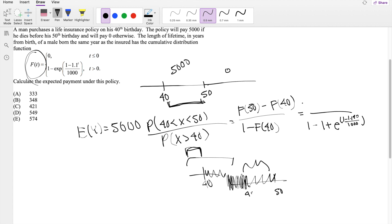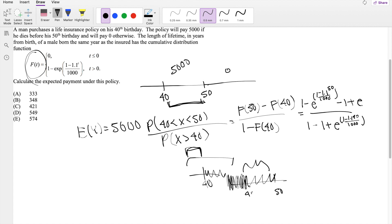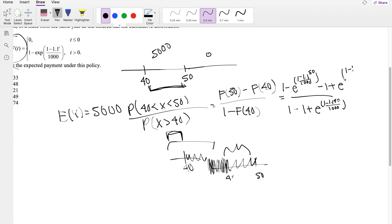And this one right here is going to be 1 minus 1 minus 1.1 to the 50th power divided by 1,000 minus 1 plus E to the 1 minus 1.1 to the 40 divided by 1,000. Oh, that's a mouthful.